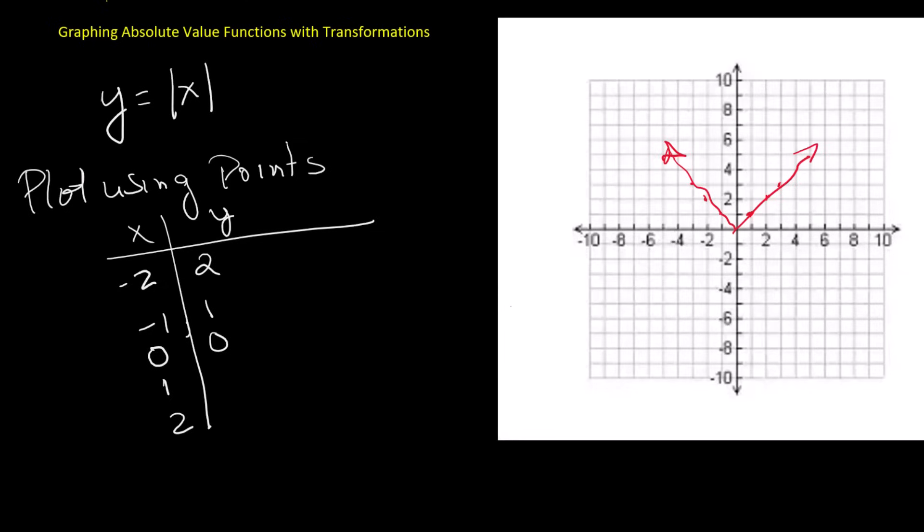The absolute value of 0 is 0. The absolute value of 1 is 1. The absolute value of 2 is 2. Plot these points and connect them. The result is the basic V-shaped graph.